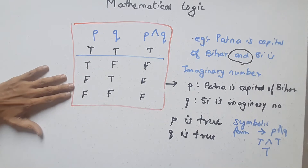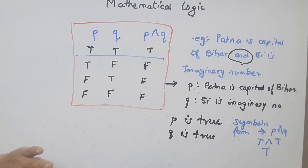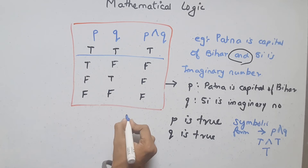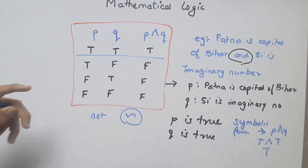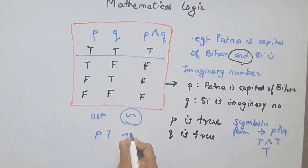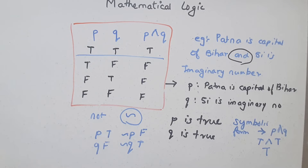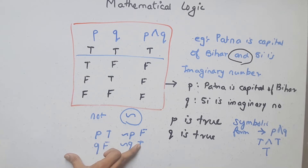Similarly, for all four symbols there are rules. The easiest rule is for negation (NOT). Negation simply means the opposite — ultra. If P is TRUE, then ¬P is FALSE. If Q is FALSE, then ¬Q is TRUE. Negation just reverses the truth value.